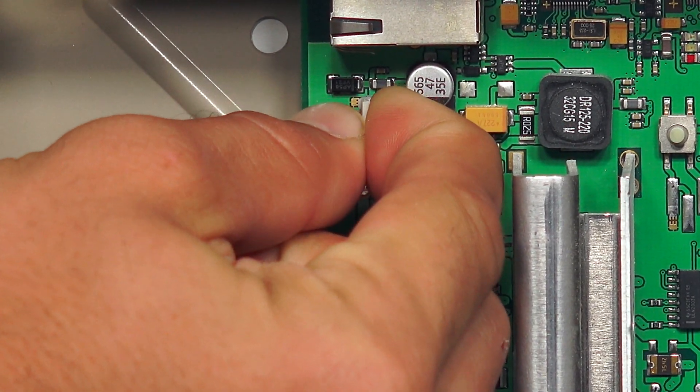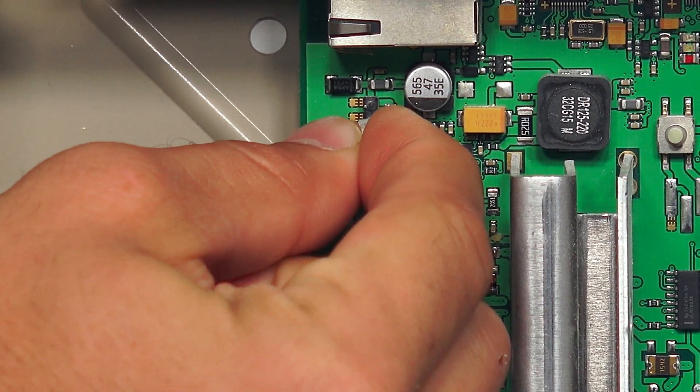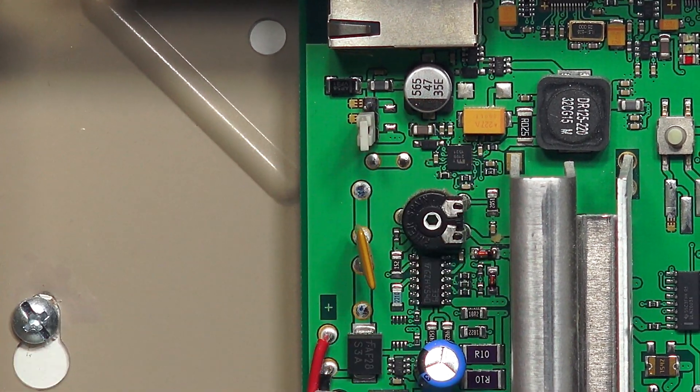So the first thing I'm going to do is I want to move this jumper into the off position, which is the bottom two pins.